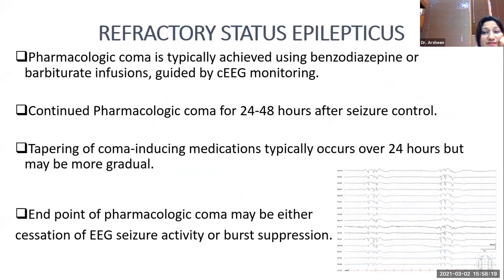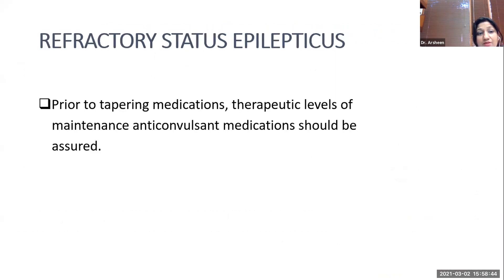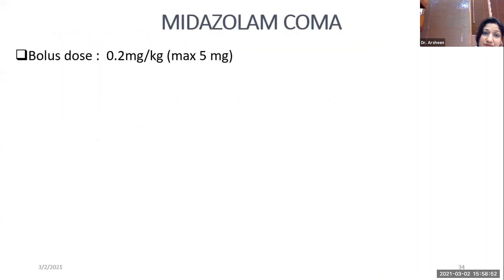For refractory status epilepticus, pharmacologic coma is typically achieved using benzodiazepines and barbiturates guided by continuous EEG monitoring. Pharmacologic coma is continued for 24 to 48 hours after seizure control, with tapering occurring over 24 hours or more gradually. The endpoint may be either seizure cessation or burst suppression pattern. Prior to tapering, therapeutic levels of maintenance anticonvulsant medications should be assured.